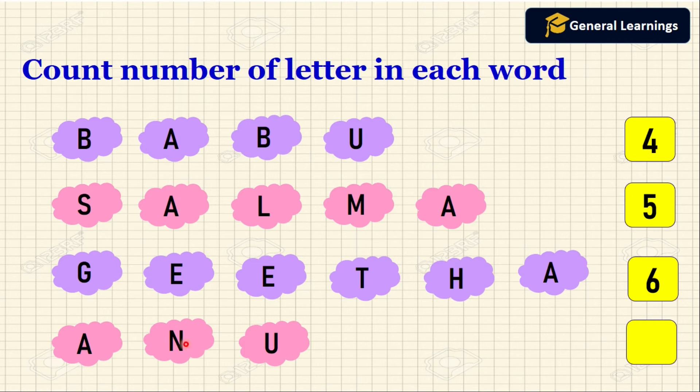A, N, U. How many letters? 1, 2, 3. So 3 letters are present in this word.